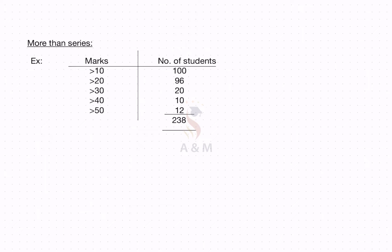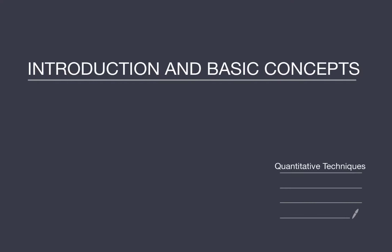Next is the more than series. The difference is only 10. Therefore, more than 10 means it should be 10 to 20, 20 to 30, 30 to 40, 40 to 50, and the last one is 50 to 60. The number of students — that is the frequency — will remain the same. In this session, you understood the basic terms and concepts.